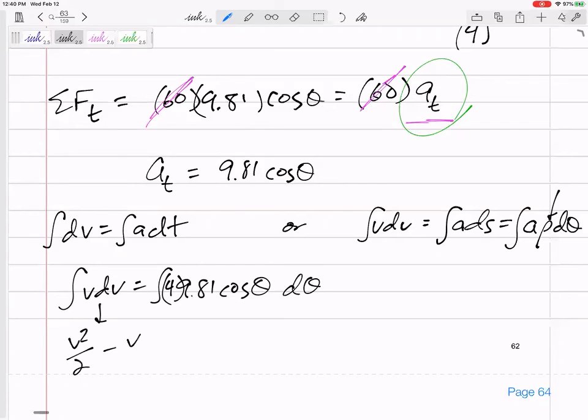This one, V squared over 2, V final minus V initial, I think it did start from rest. And here, so whatever 4 times 9.81 is, integral of cosine theta, positive sine theta. And this is going, we're going from a theta of zero to a theta of 60.